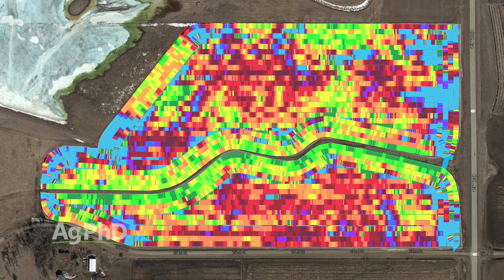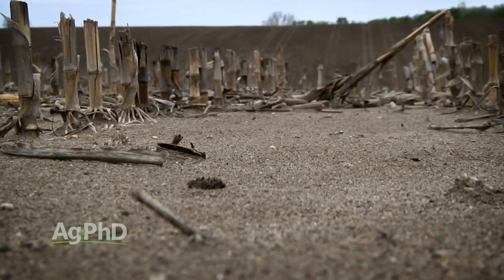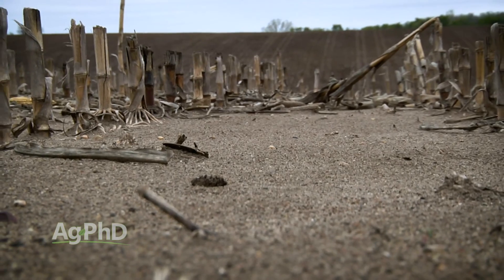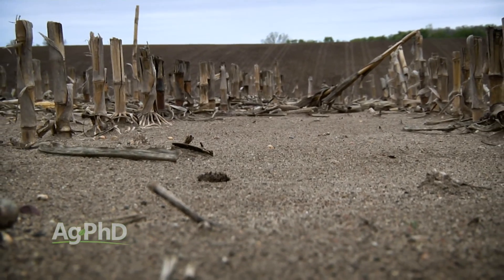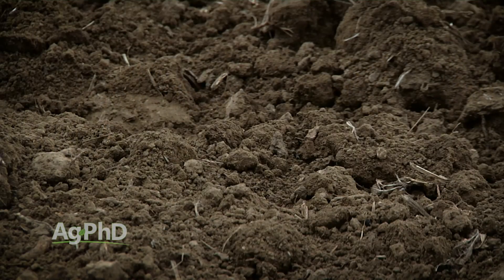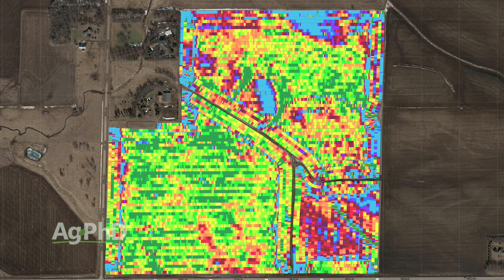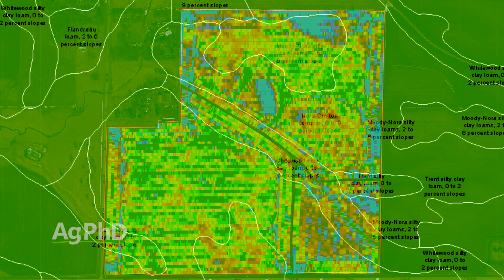That's not to say you couldn't still use the soil type map. For example, we've got some issues with sandy strips running right up the middle of really good heavy ground. That's pretty obvious, and it actually does show up on the soil test, shows up on the yield map, but it also definitely shows up on that soil type map.